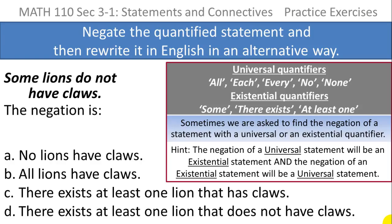Going back again to the hint about universal versus existential quantifiers, this 'some lions' - the 'some' is an existential quantifier, so the negation will be one of the universals.